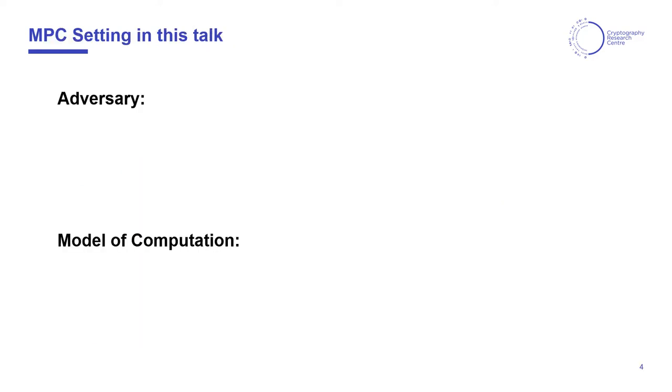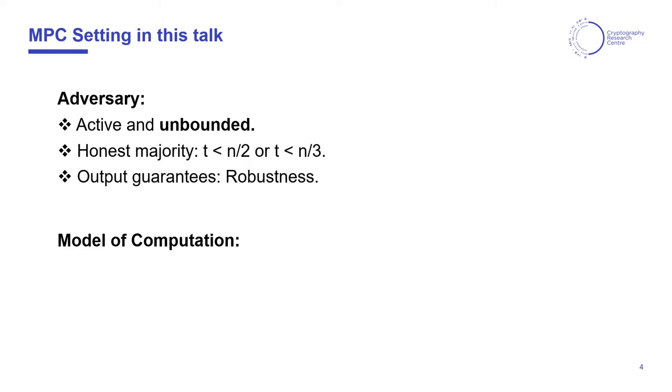Since there are many kinds of MPC protocols, let us narrow the scope to the ones in this work. We will be dealing with an adversary that might actively deviate from the protocol specification and which is moreover unbounded in terms of computational power. Due to this, we need to restrict ourselves to a scenario where less than half of the parties will be corrupted, and we will also look at this scenario where less than a third of the parties are corrupted. Since we have this restriction in the corruption threshold, we can achieve guaranteed output delivery or robustness.